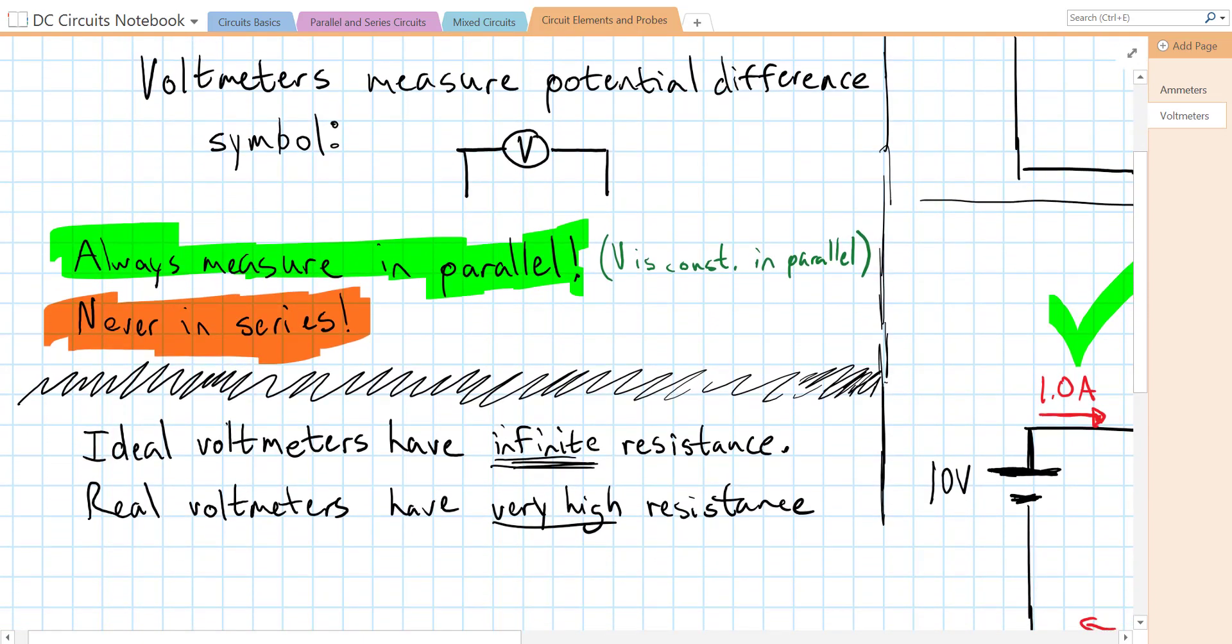An ideal voltmeter has infinite resistance, and that's so that the circuit is not changed. In reality, of course, voltmeters can't have an infinite resistance, but they do have a very high resistance. And that means that almost no current is going to run through the path that our voltmeter takes.